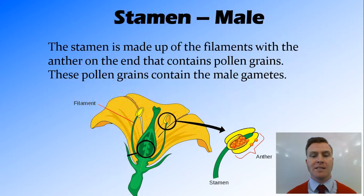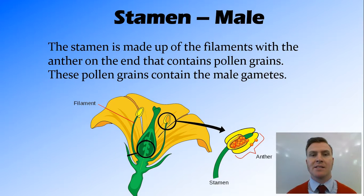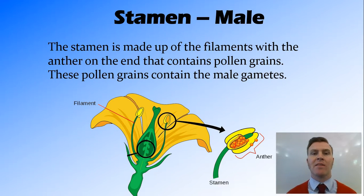The stamen is around the outside, and it consists of filaments, which are like stalks. On the end of those filaments is the anther, and the anther is where pollen grains are released from when mature.